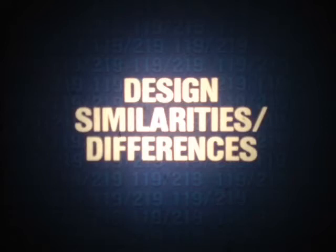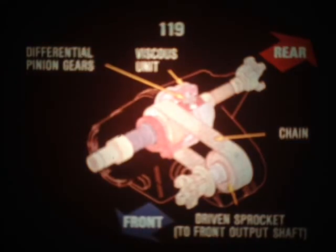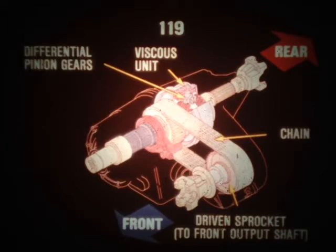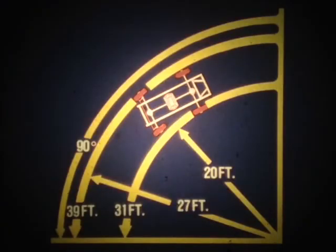Both cases use the same basic design, but the 219 has some additional components needed to provide Jeep drivers with four ranges. Here's a cutaway view of the 119 case. This unit features a drive chain and differential pinion gears. The drive chain drives a sprocket for the front axle only. A viscous coupling is used here to provide the case's torque biasing capabilities. Let's take a minute to discuss the reason why a differential and viscous coupling are necessary in these full-time transfer cases.